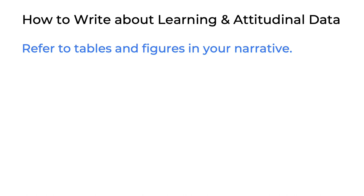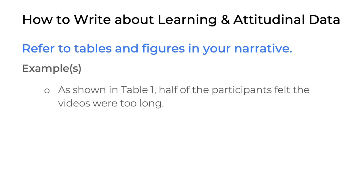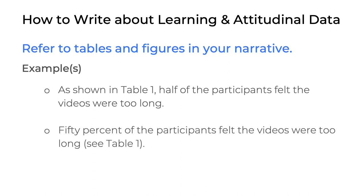We also want to remind you to explicitly refer to tables and figures in your narrative write-up. The ways you can do that are super simple. For example: 'As shown in table one, half of the participants felt the videos were too long.' There's a very clear reference in the sentence itself to table one. Another way to do that is to put the reference at the end of the sentence in a parenthetical statement, like: '50% of the participants felt the videos were too long (see table one).' These are two different ways of accomplishing the same thing.